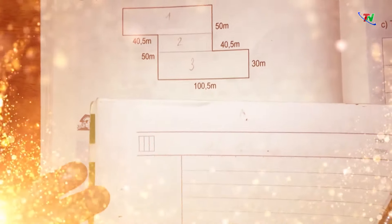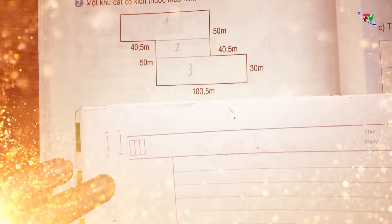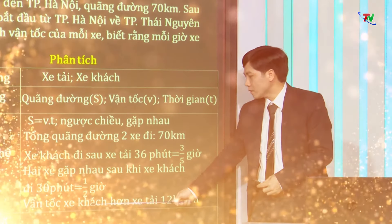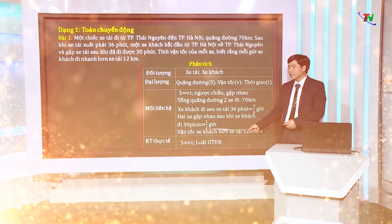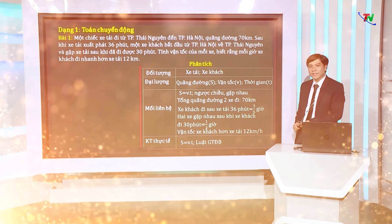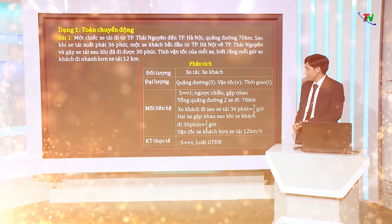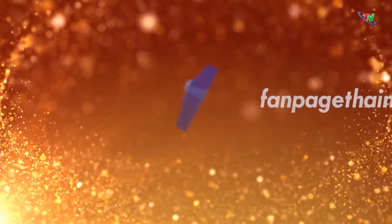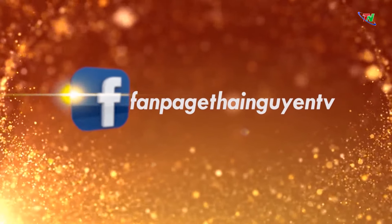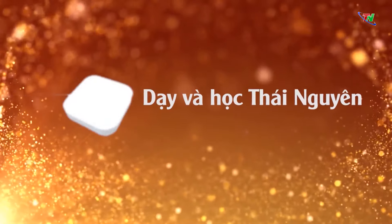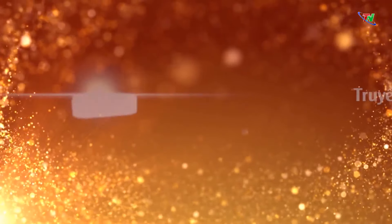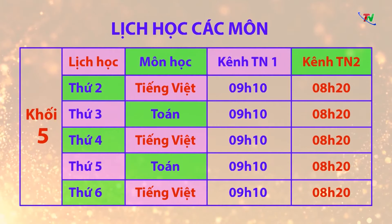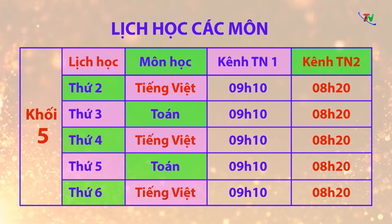Chương trình được phát sóng lúc 8h20 phút thứ 2 đến thứ 6 hàng tuần, phát lại vào buổi chiều cùng ngày trên cả 2 kênh TN1 và TN2 Đài Phát Thanh Truyền hình Thái Nguyên, bắt đầu từ ngày 16 tháng 3. Đồng thời được đăng tải trên website thainyuentv.vn, trên fanpage Truyền hình Thái Nguyên TNTV, trên 2 kênh Youtube Dạy và Học Thái Nguyên và Truyền hình Thái Nguyên TNTV, giúp học sinh có thể xem lại bất cứ lúc nào.